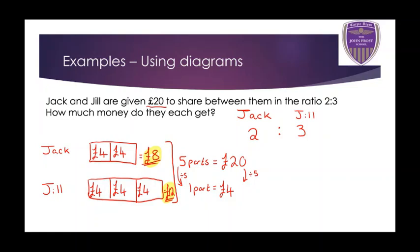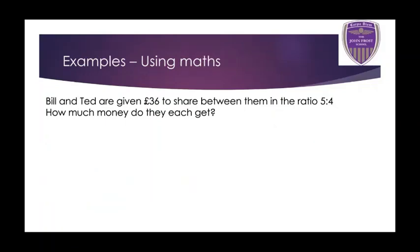Now let's look at the mathematical method. Bill and Ted are given 36 pounds to share between them in the ratio 5 to 4. How much money did each get? The first step is to find out the total parts. We add up the ratio numbers: 5 plus 4 means there are 9 parts in total.